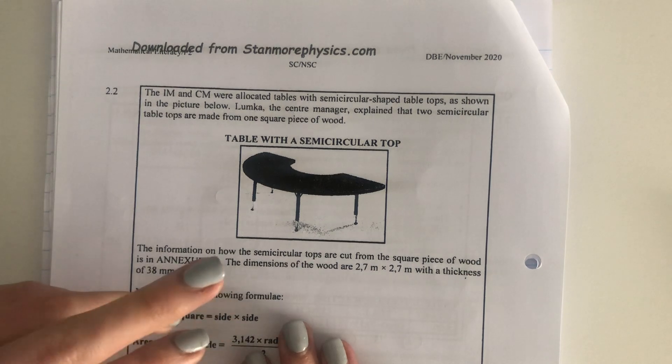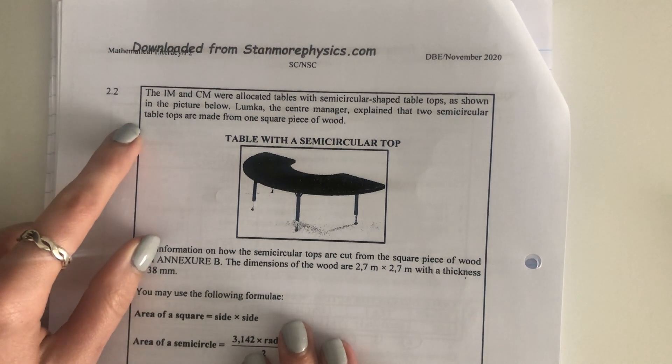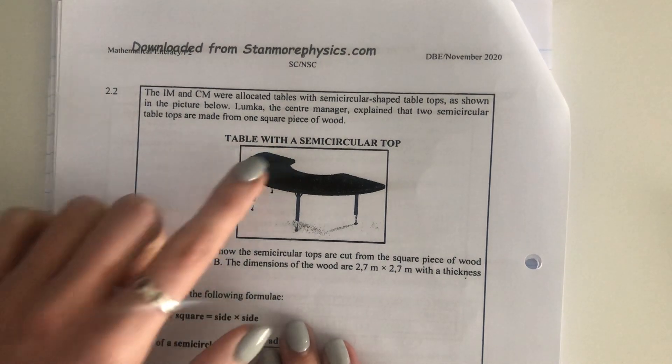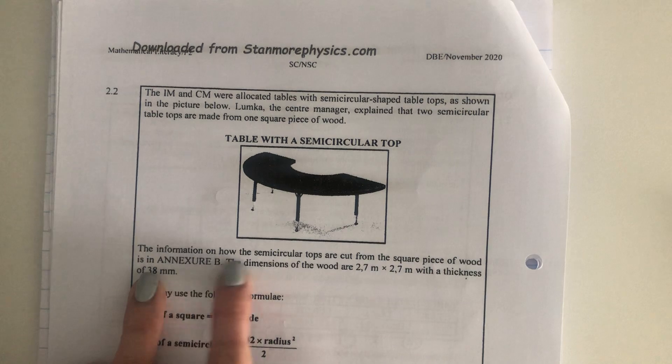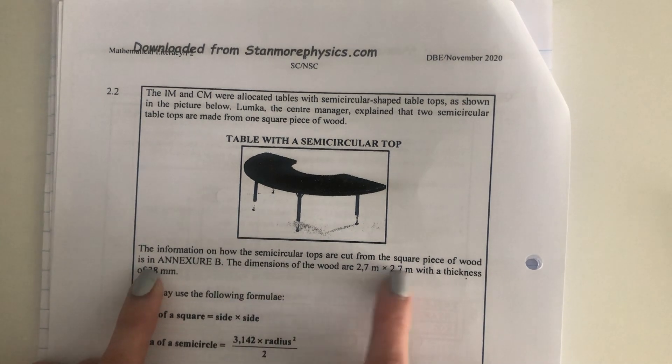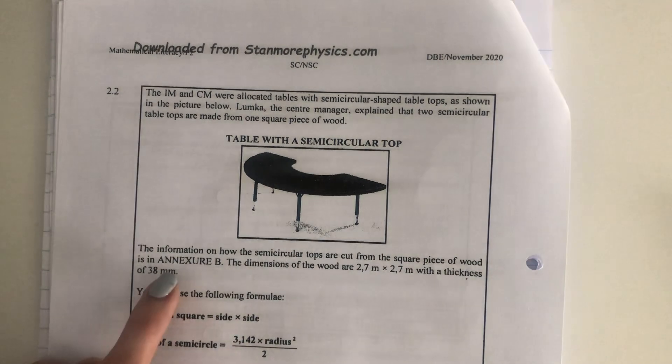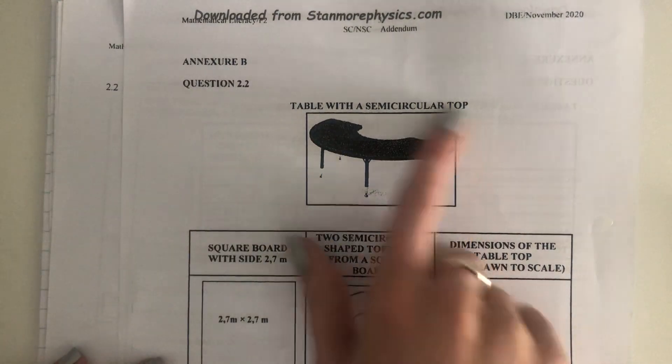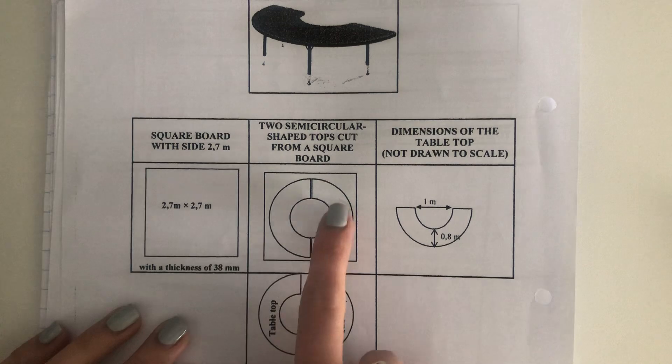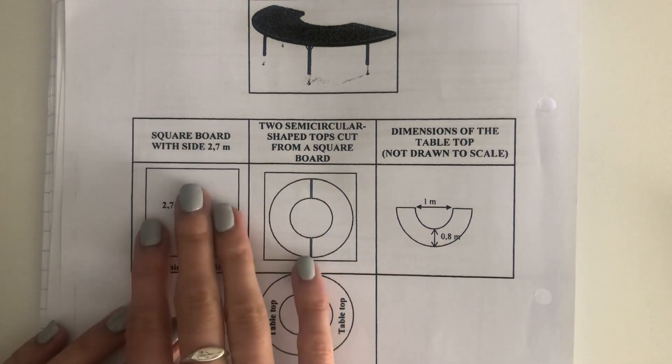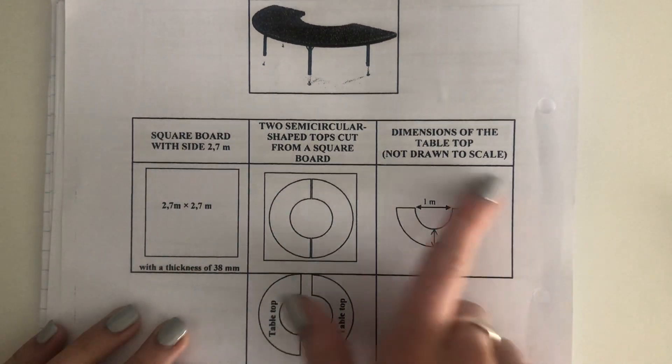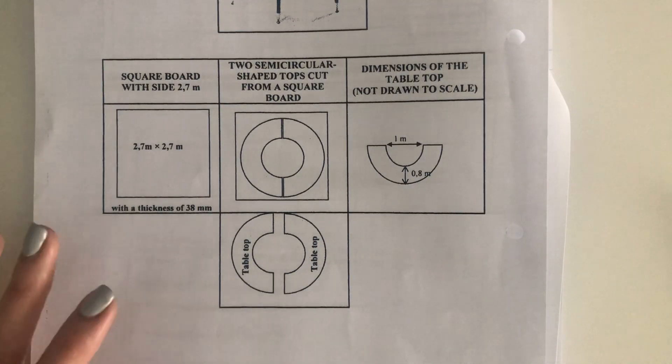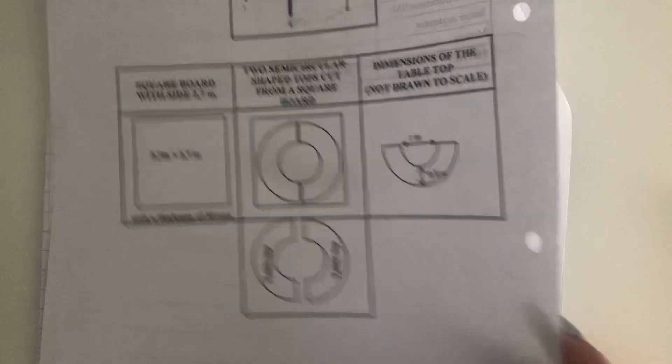Lumka, the center manager, explained that two semi-circular tabletops are made from one square. That's important. What does a square mean? Equal sides, piece of wood. The information on how the semi-circular tops are cut from the square piece of wood are annexed to B. So make sure you go find that now at this juncture.